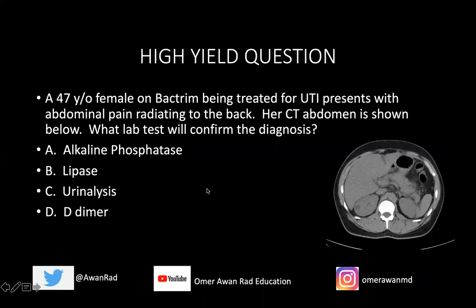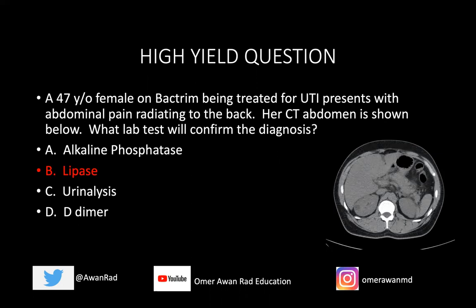Back to our question: a 47-year-old female on Bactrim — a sulfa drug, which is a risk factor for pancreatitis — presents with pain radiating to the back, a characteristic finding of acute pancreatitis. The CT shows pancreatic enlargement with peripancreatic edema and fat stranding, consistent with acute pancreatitis. Since lipase is more specific than amylase for pancreatitis, the answer is lipase. Tune in next week for another USMLE Domination tutorial. Please share this and let the information go viral. Thank you for your attention.